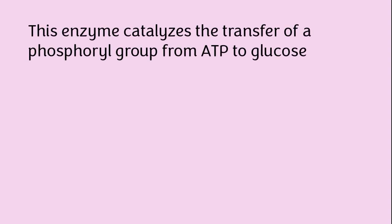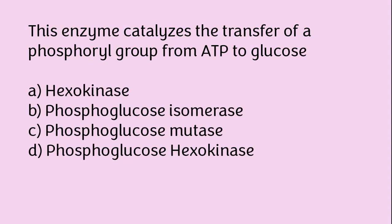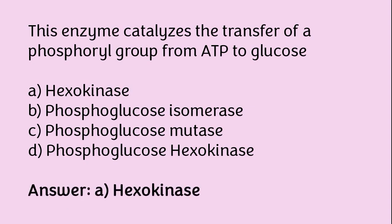These enzymes catalyze the transfer of a phosphoryl group from ATP to glucose: hexokinase, phosphoglucose isomerase, phosphoglucose mutase, or phosphoglucose hexokinase? The correct answer is option A — hexokinase.